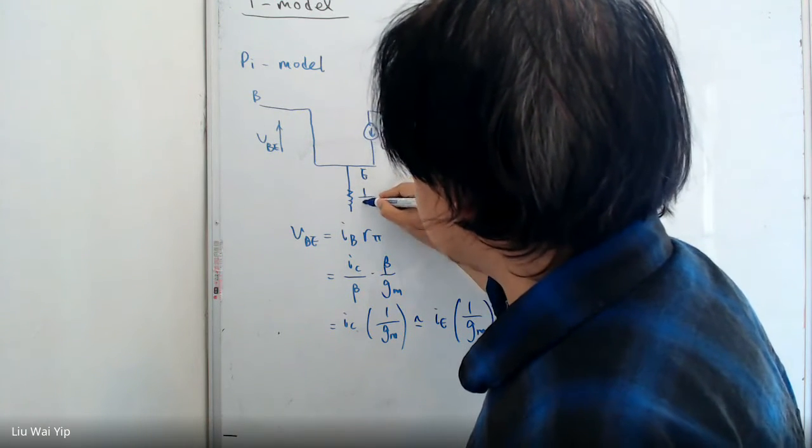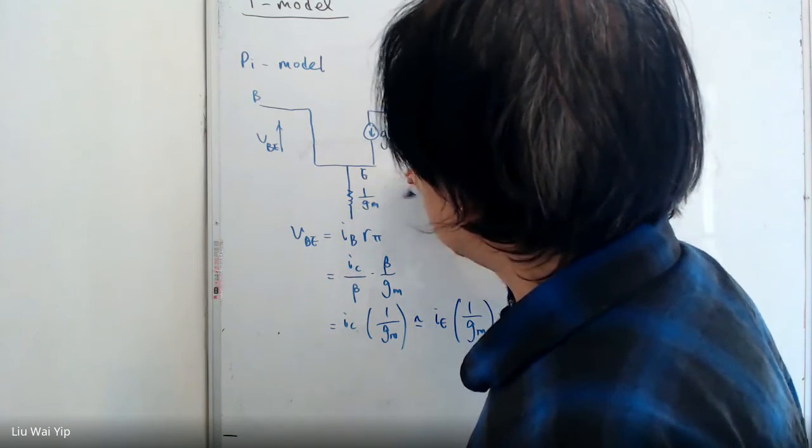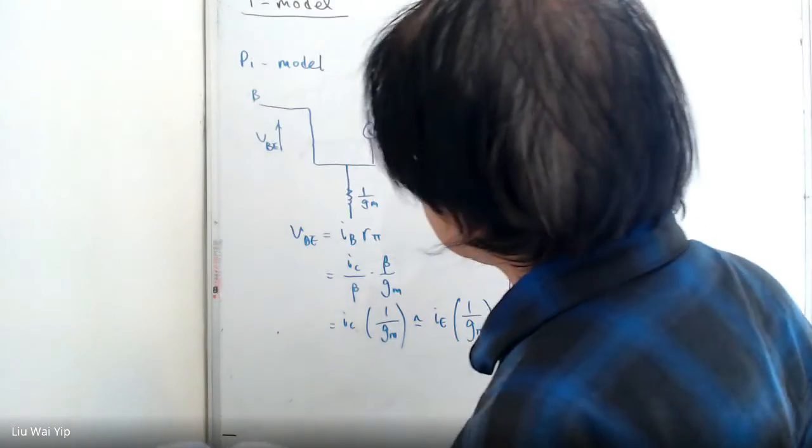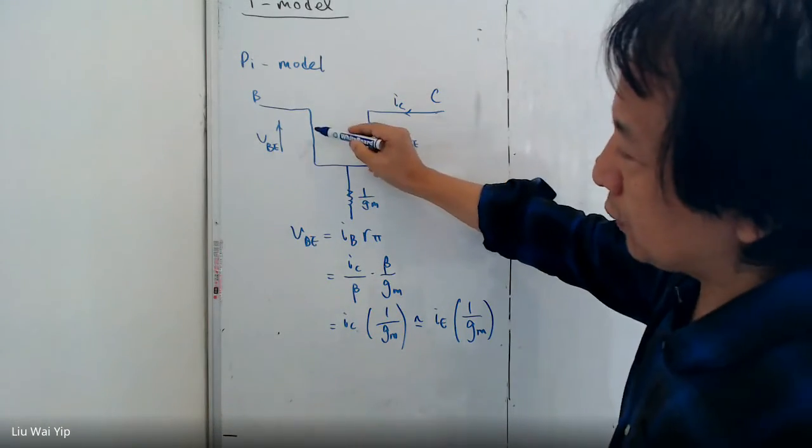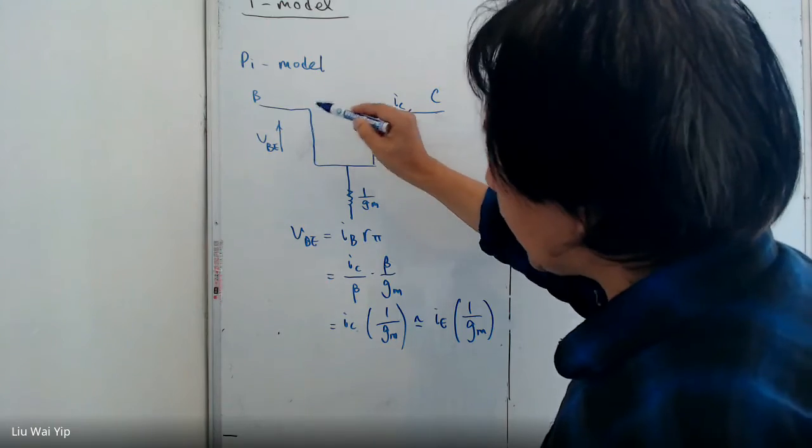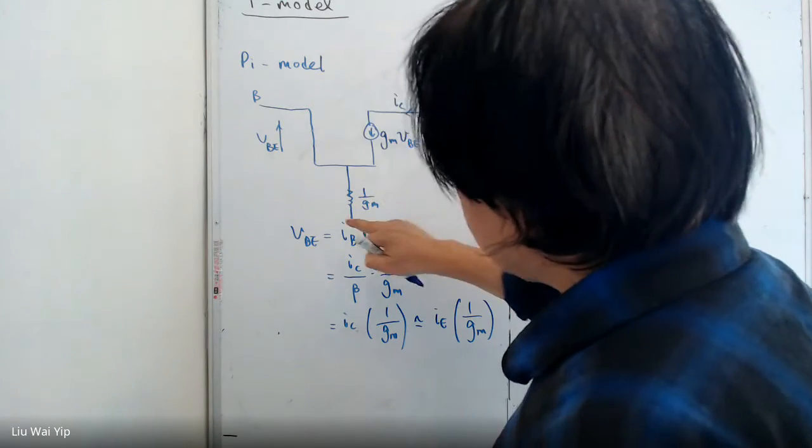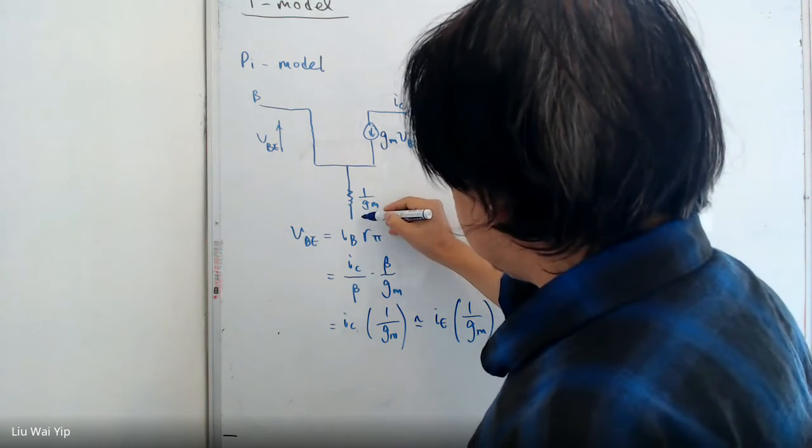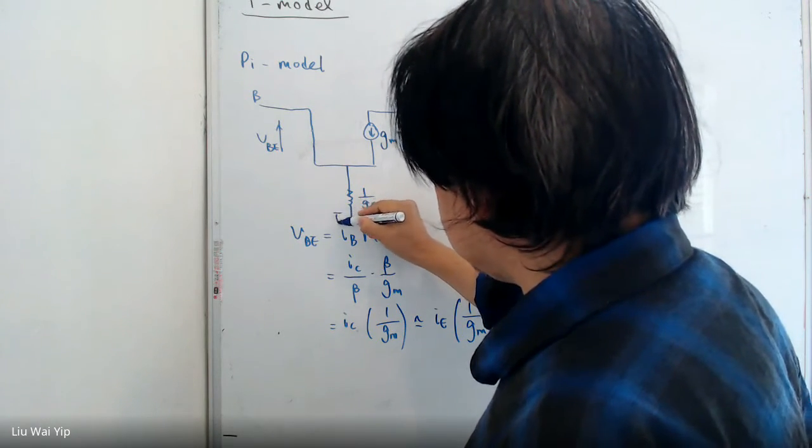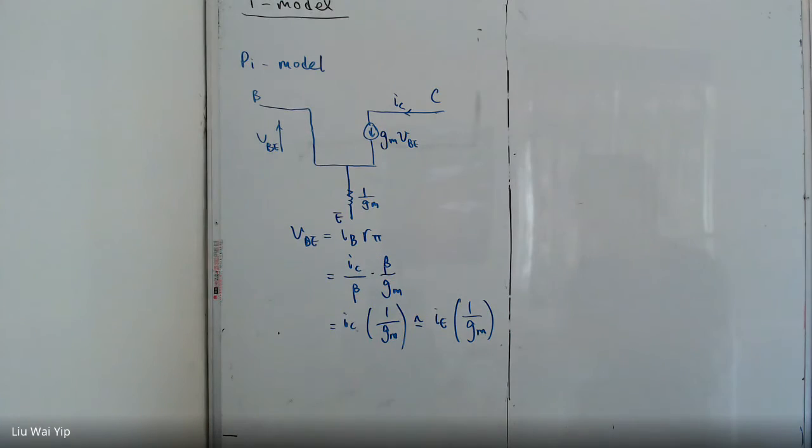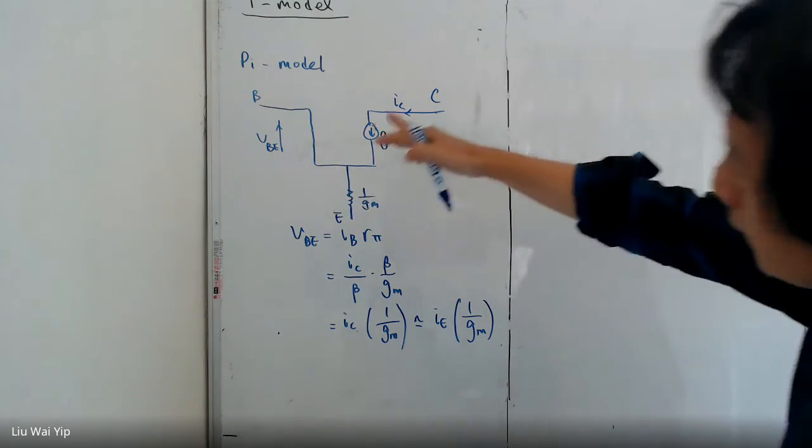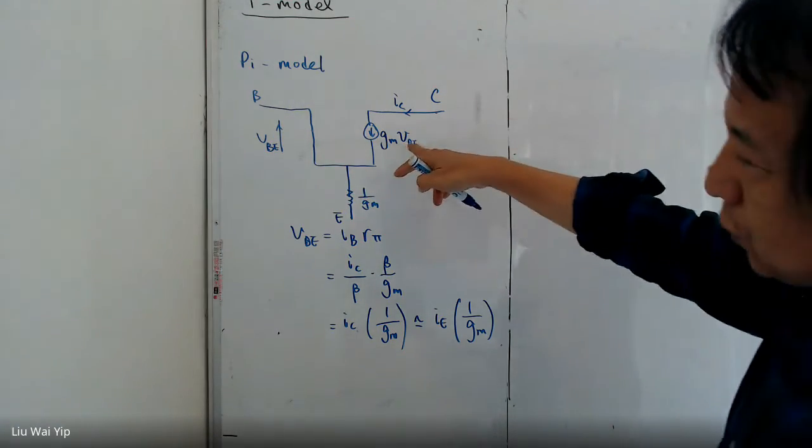One over GM here. So in other words, this is a new model. Originally, the input resistance starting here as R pi. But now, you have another resistance here, which is this one, E. And this model is called T model.